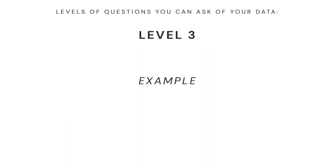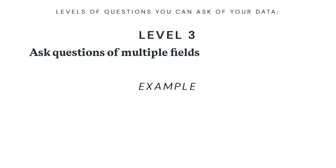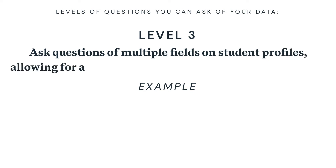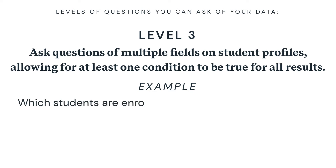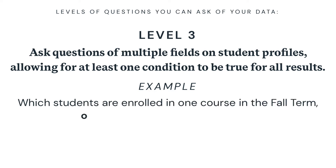Level three lets you ask questions of multiple fields on student profiles, allowing for at least one condition to be true for all results. For example, which students are enrolled in one course in the fall term or one course in the spring term?